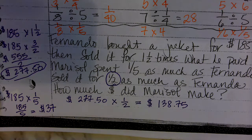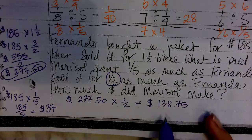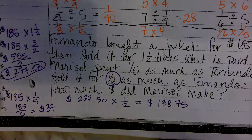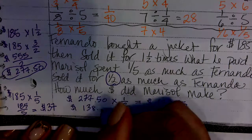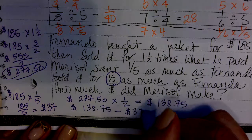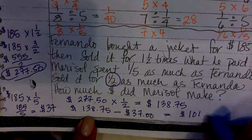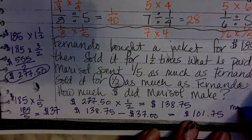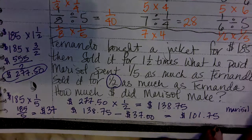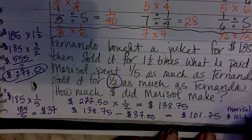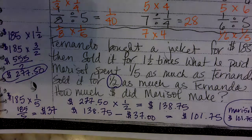So that's how much Marisol sold her jacket for. Now, how much did Marisol make? Take $138.75 and subtract $37, which gives you $101.75. Marisol made $101.75. Remember, when you answer the question, you need to include all the information.